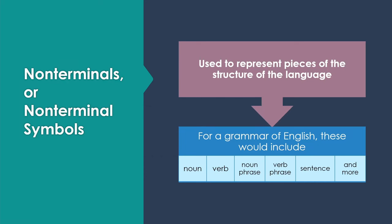Non-terminals or non-terminal symbols are used to represent pieces of the structure. For a grammar of English, these would include things like noun, verb, noun phrase, verb phrase, sentence. For a programming language, they might include things like statement, or condition, or subroutine. They basically identify pieces of the syntax that it makes sense to work with. But notice they don't appear in the actual program. These are labels for parts of the program that makes sense as part of the structure.